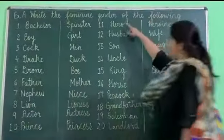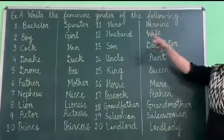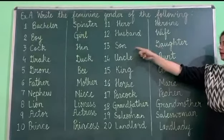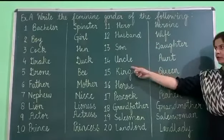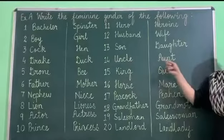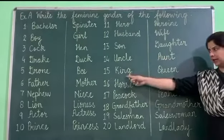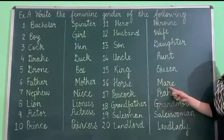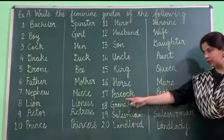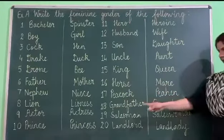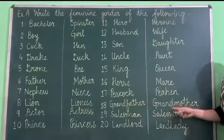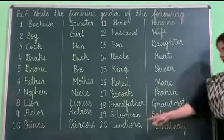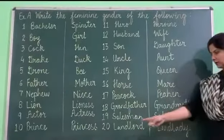Number eleven: Hero / Heroine. Number twelve: Husband / Wife. Number thirteen: Son / Daughter. Number fourteen: Uncle / Aunt. Number fifteen: King / Queen. Number sixteen: Horse / Mare. Number seventeen: Peacock / Peahen. Number eighteen: Grandfather / Grandmother. Number nineteen: Salesman / Saleswoman. Number twenty: Landlord / Landlady.